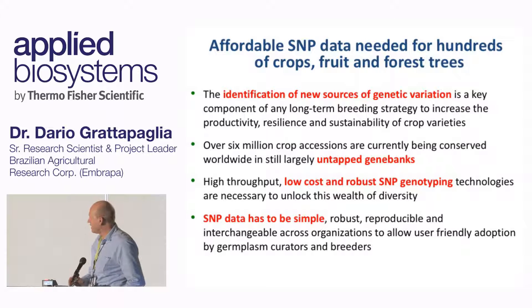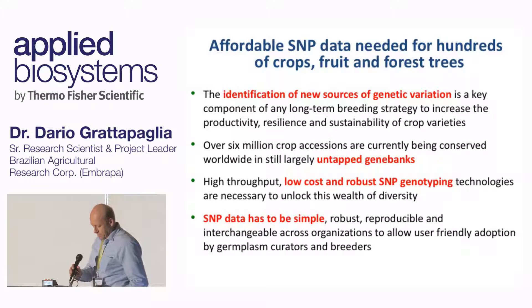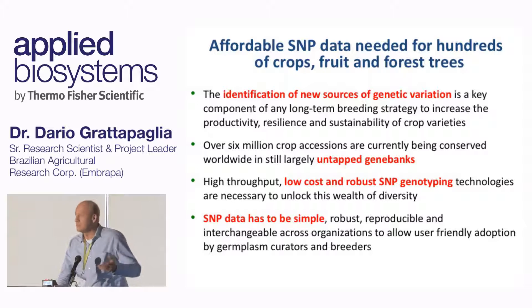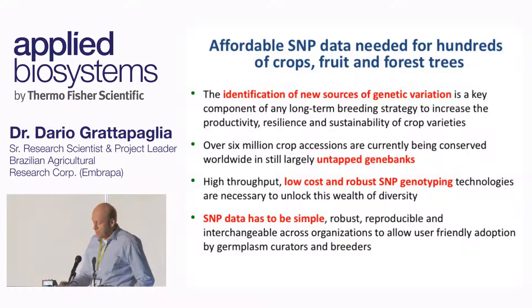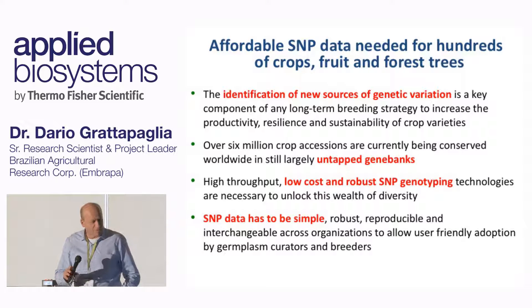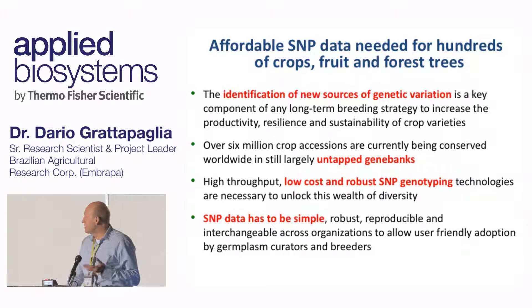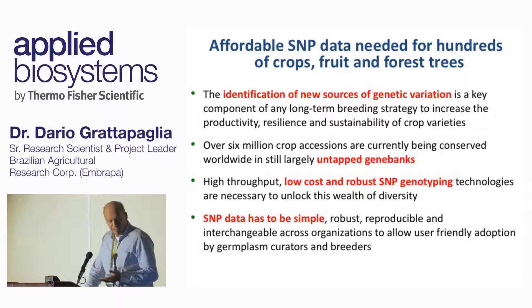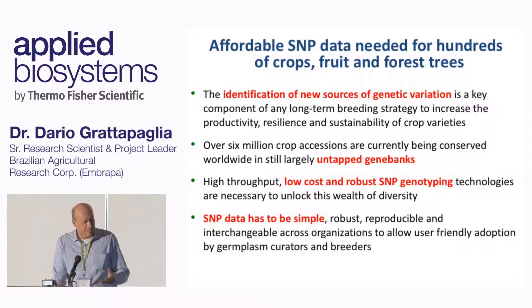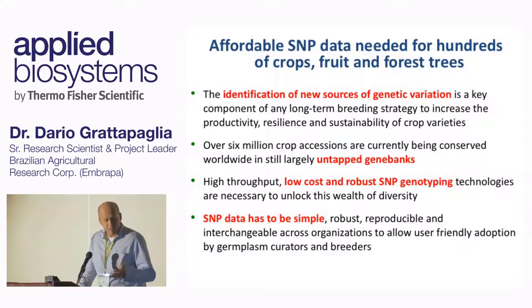It's very clear to everyone that we need affordable SNP data, not for a few crops, but for hundreds of crops and trees. This is really the big challenge for us. When you're dealing with a single species like maize or rice it's one thing, but when you're in a lab that receives demand from several germplasm banks and several breeding programs, you have to figure out ways to solve everybody's problem. SNP data has to be low cost, very robust, user-friendly for breeders and germplasm curators, and of course very affordable.